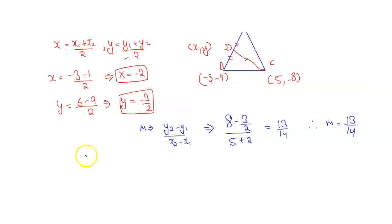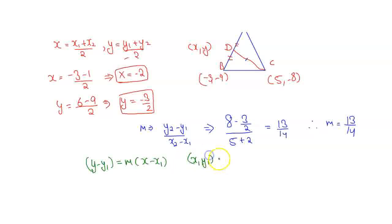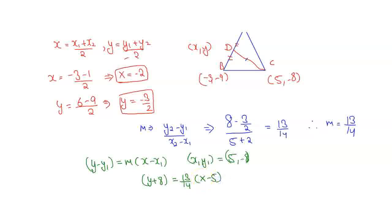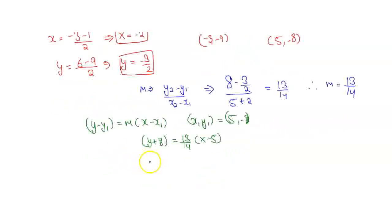Now we have found the slope, and point C is given to us, so we can find the equation of the line using the formula: y - y1 = m(x - x1). Taking x1 = 5 and y1 = -8, we get: y + 8 = (13/14)(x - 5). Further solving this equation, we get 13x - 14y - 47 = 0. And this will be our answer.